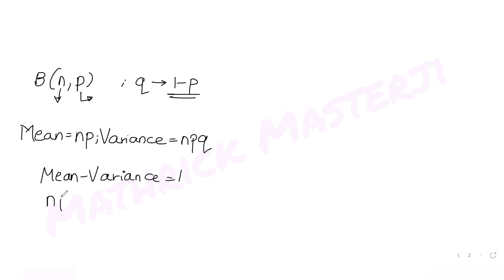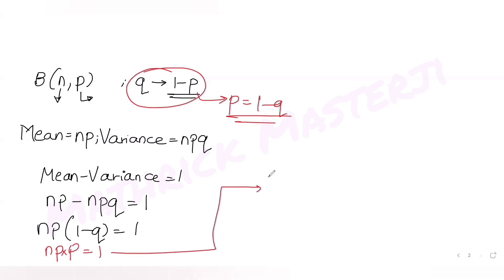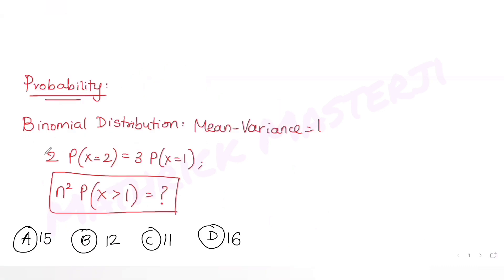We know that mean minus variance equals 1. So np minus npq equals 1. Taking np common, we get np(1 minus q) equals 1. Since 1 minus q equals p, we get np times p equals 1, which gives us np² equals 1. From here we can also write n as 1 upon p squared. We'll use this result in the next steps.